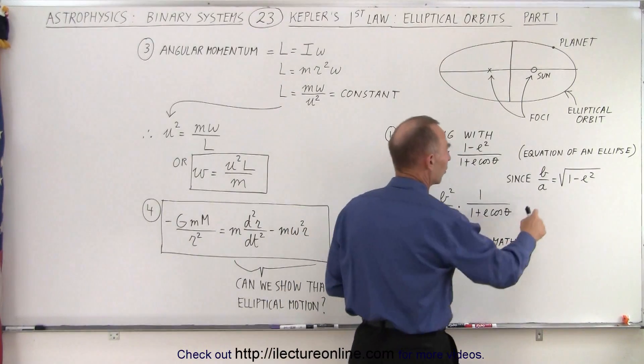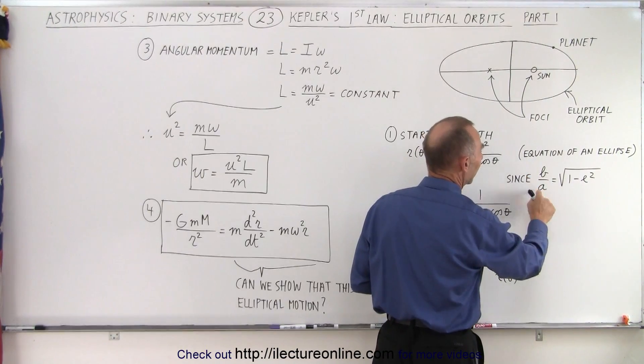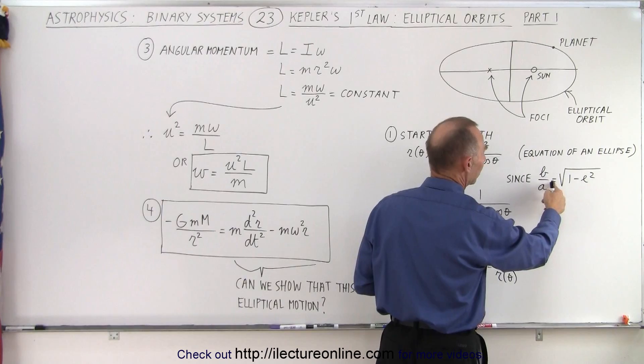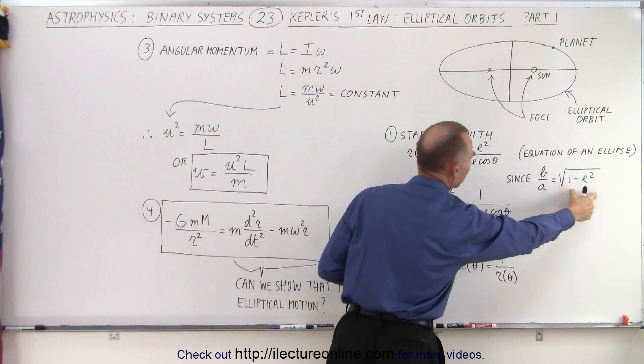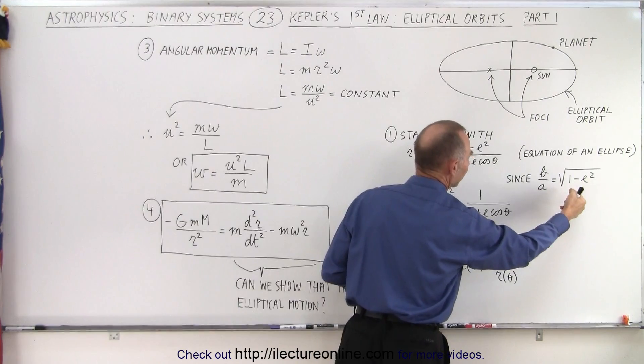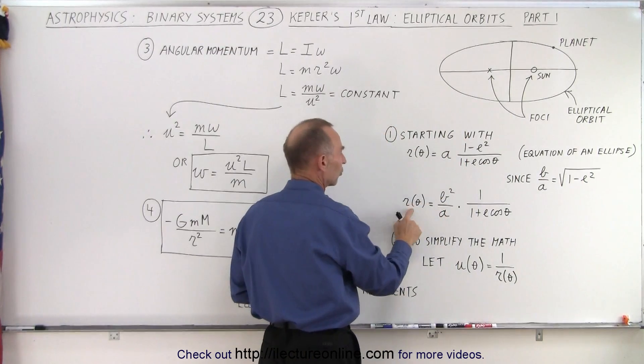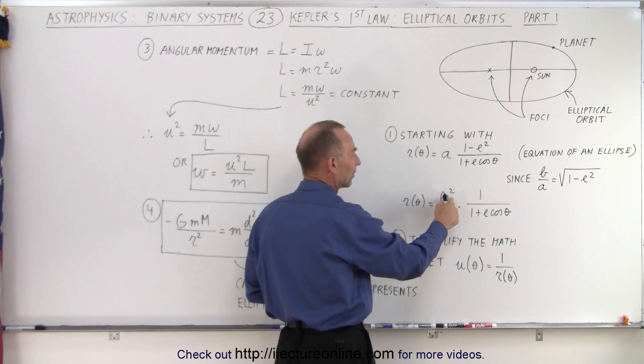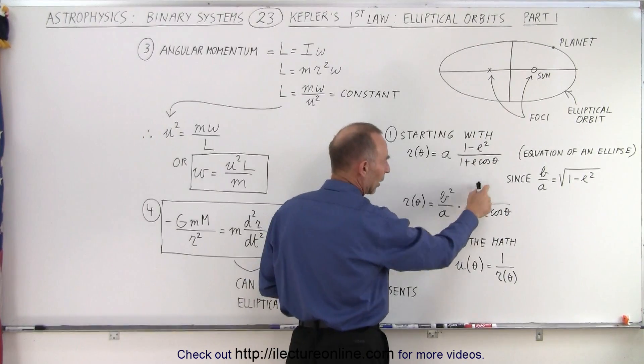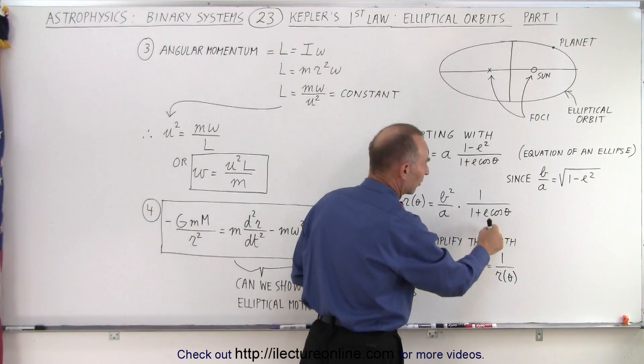We can also express it in terms of the semi-major and semi-minor axes, where the ratio equals the square root of 1 minus E squared. If you square both sides and make the substitution, we can write the radius as a function of theta as B squared over A, times 1 over 1 plus E times cosine of theta, where B is the semi-minor axis and A is the semi-major axis.